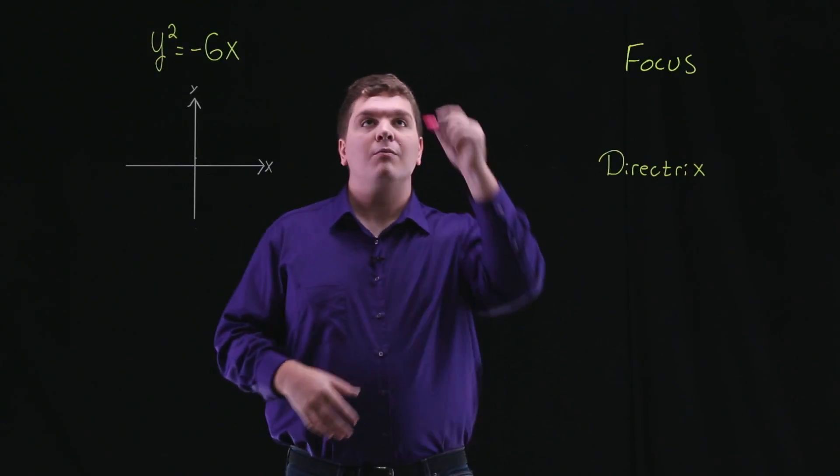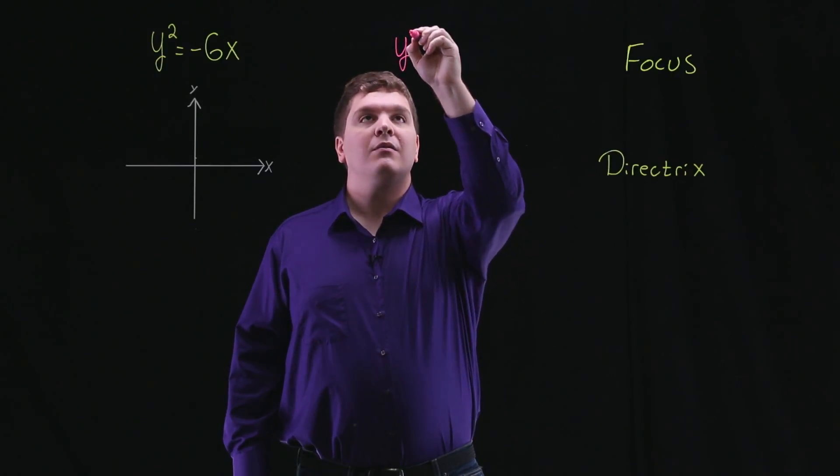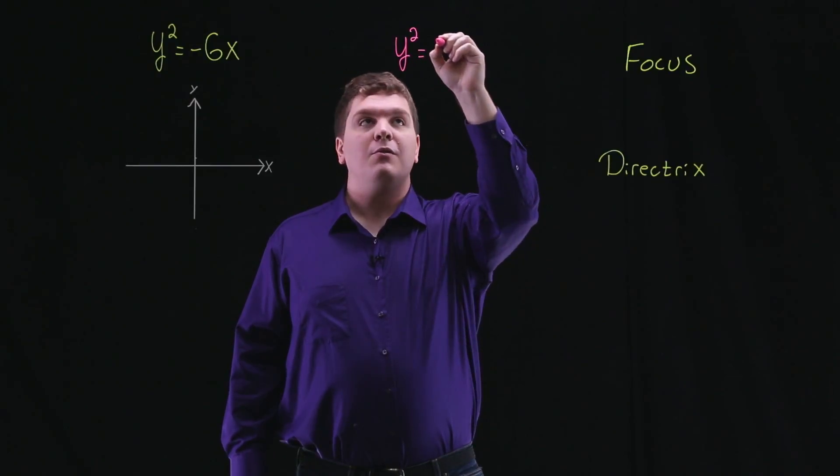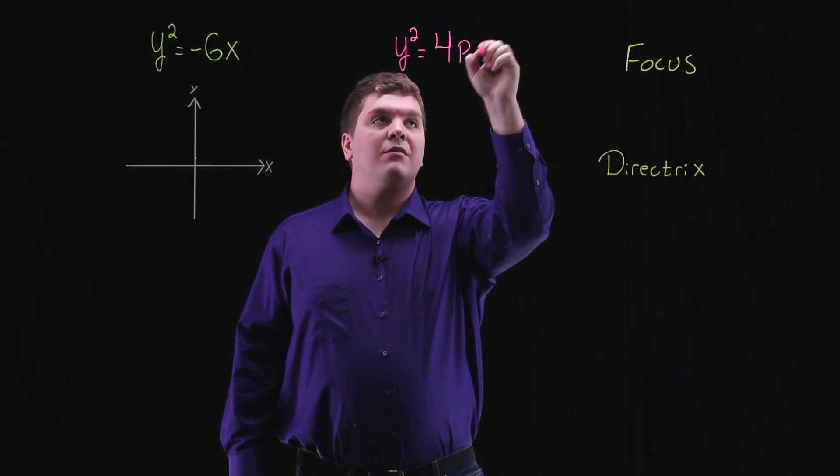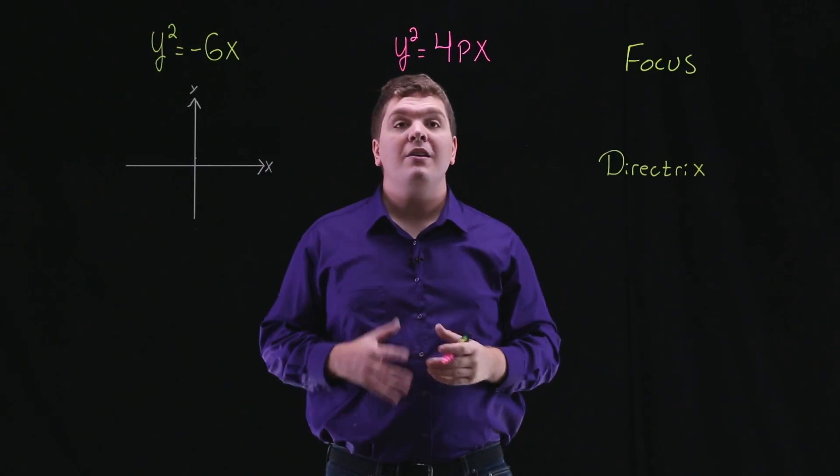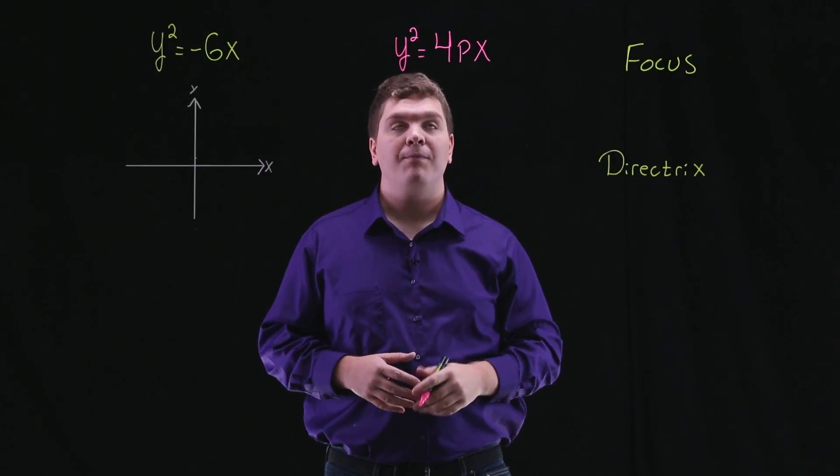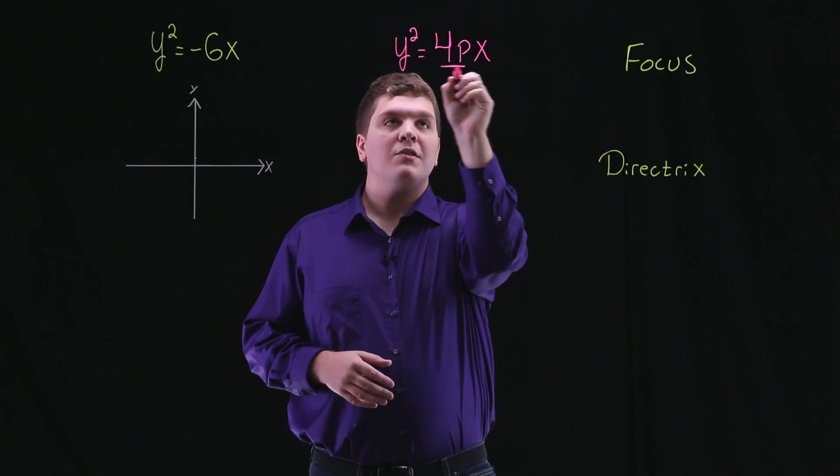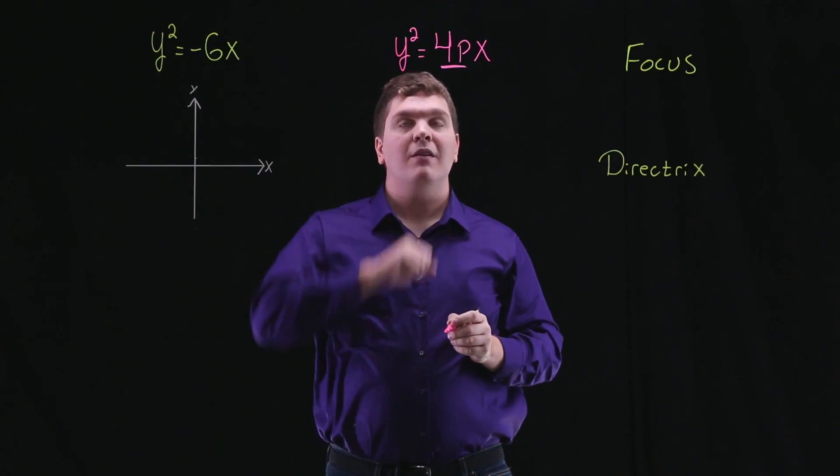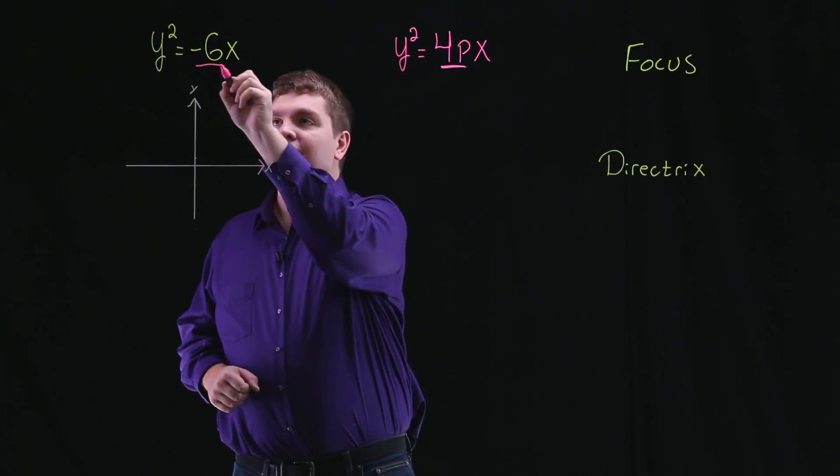Since the general form is y² = 4px, we can use this information to solve for p. What we want to do is relate this 4p in this form with our -6 here.